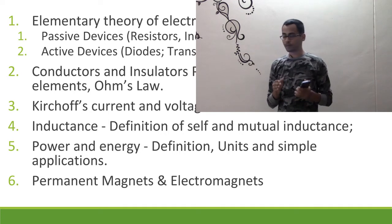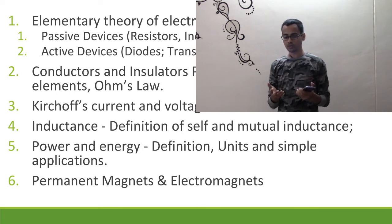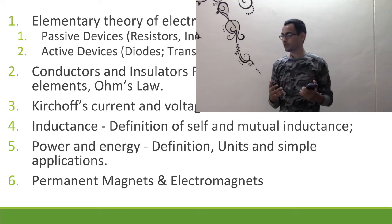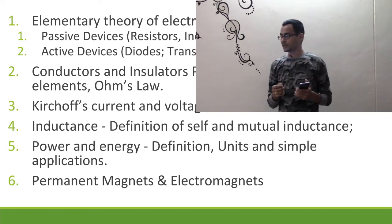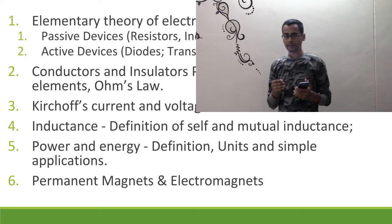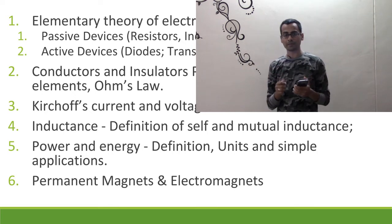Then we come to the concept of power and energy, which is at the crux of everything we do. Every device requires energy to operate, so we understand how this energy comes and how we measure it. Then we understand what permanent magnets and electromagnets are and how they are involved in HAM radio activities. In a nutshell, this section gives you the definitions of the basic components — these are like the alphabets of the language of radio.